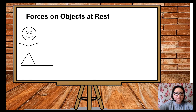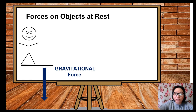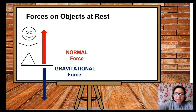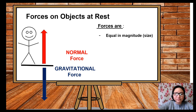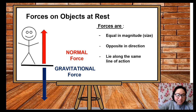Let us begin with the forces that act on objects at rest. Say for example, this man is standing on the ground. Let us identify the forces that act on this man. First is gravitational force, and the direction is downward. The next force is normal force — the force provided by any flat surface. In this example, normal force is provided by the ground. So what can we say about forces on an object at rest? This pair of forces are equal in magnitude, they are in opposite directions, and they lie along the same line of action.